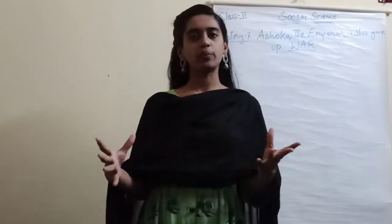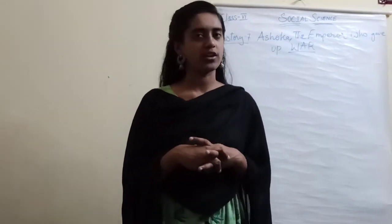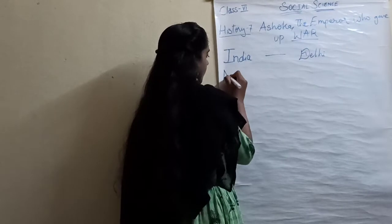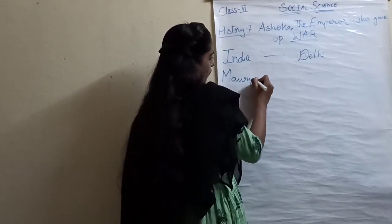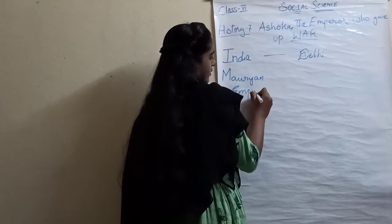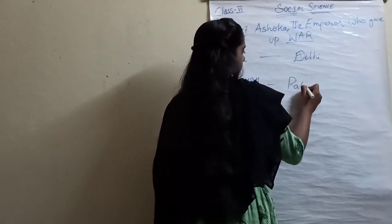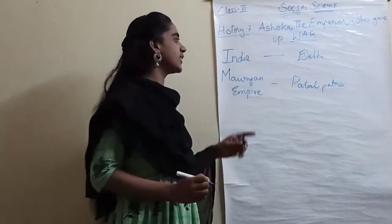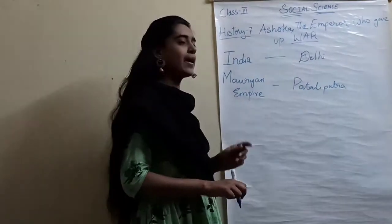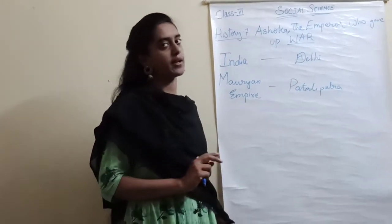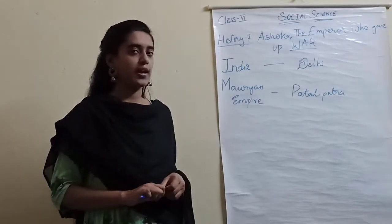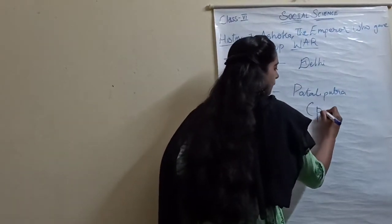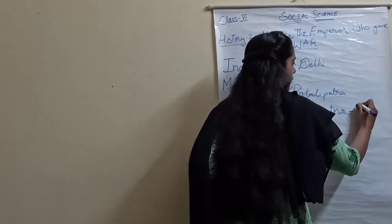Just as we have a capital of our country — Delhi — the capital of the Mauryan Empire was Pataliputra. That was its old name. Do you know what it is called today? It is Patna, and it is in the state of Bihar.